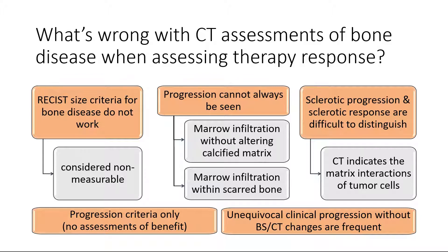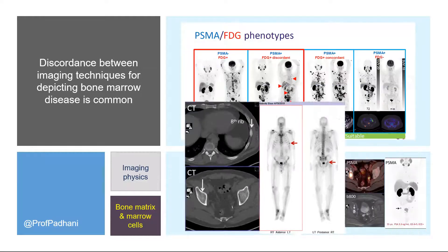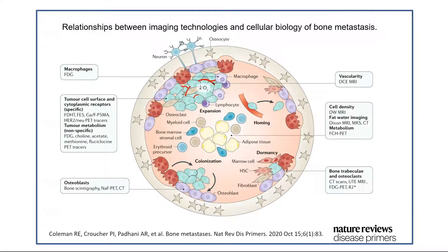To confidently distinguish sclerotic progression from sclerotic response is really difficult. The reason is that CT scans are telling you about the response of the matrix to the tumor cells — it's the matrix-tumor cell interaction that you are looking at. Discordant distributions are in fact quite common with a number of different technologies, and it's all related to imaging physics and how that relates to bone matrix and bone cellularity.